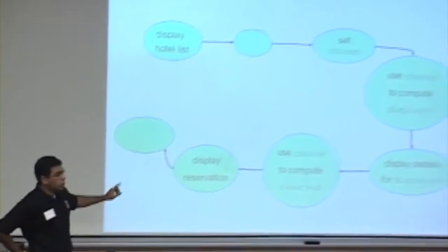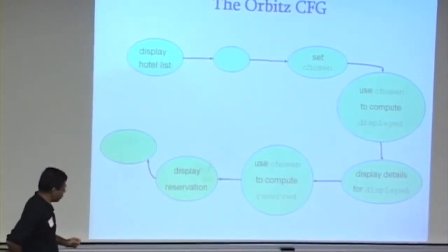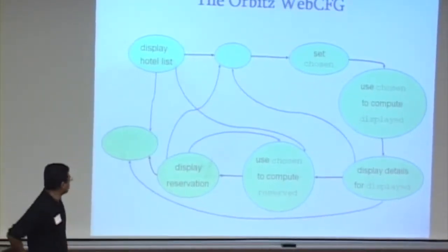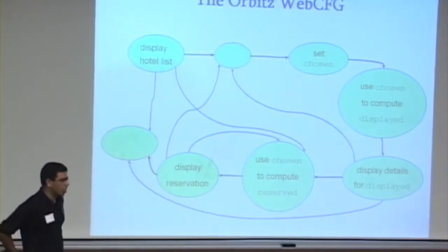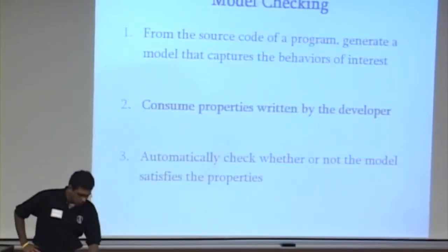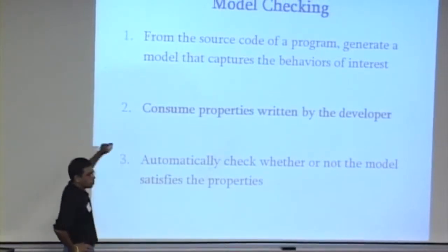So, starting off with this control flow graph that you could generate in your compilers course, the web control flow graph actually looks like this. So that's how we start, that's how we get the control flow graph.